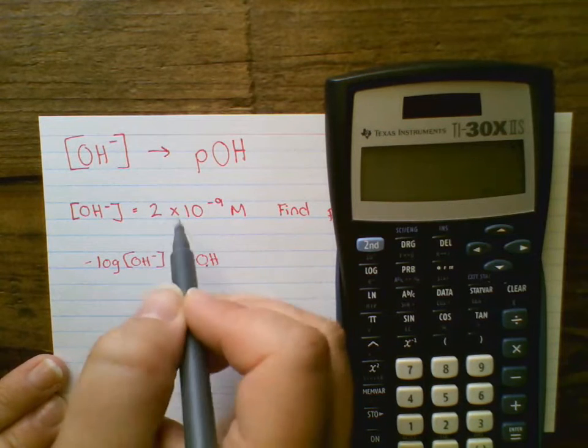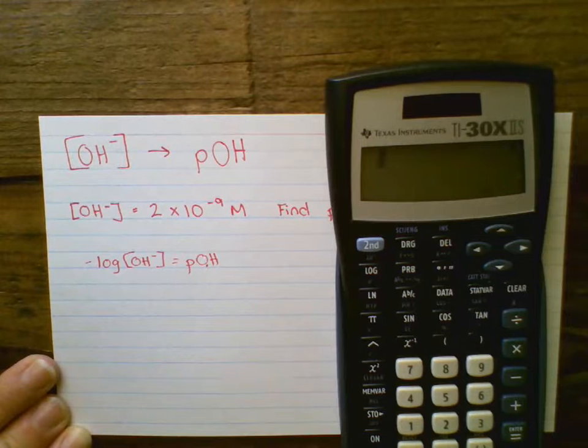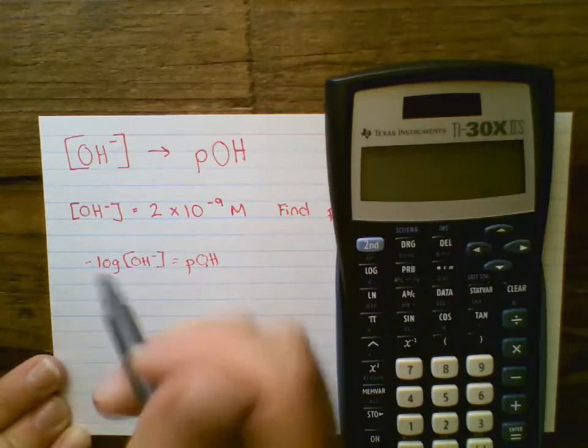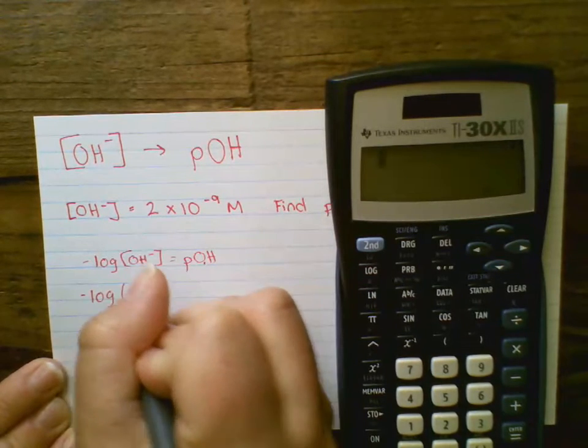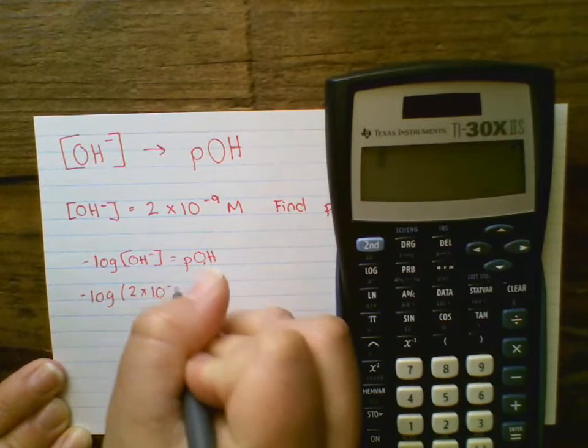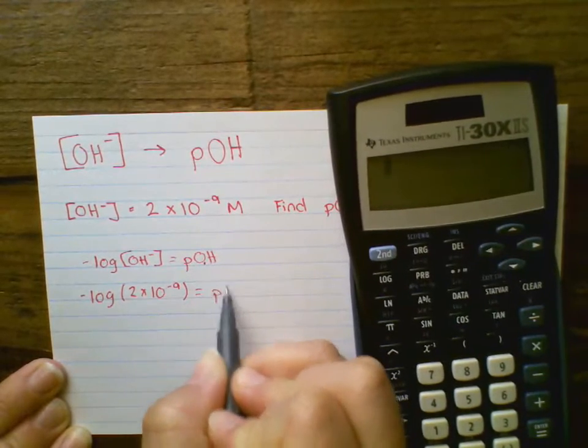I'm going to put my number in because up here it tells me I have 2 times 10 to the negative 9th molar OH-. So I'm going to do negative log of 2 times 10 to the negative 9th to get my pOH.